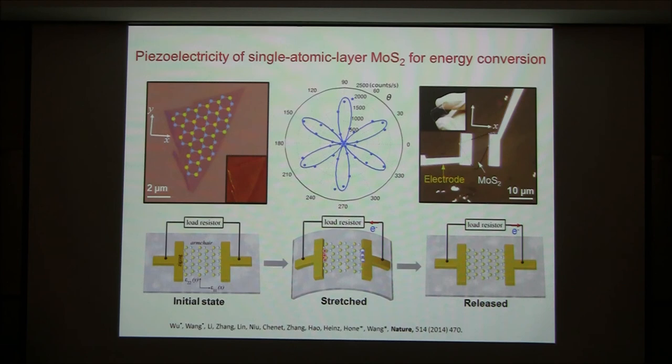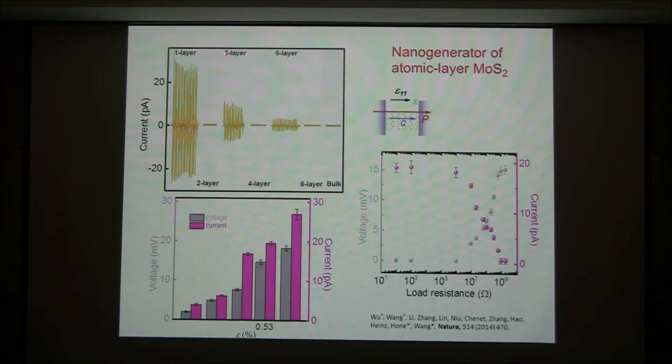This is called similar to the piezoelectric nanogenerator, just using a single atomic layer. When you release the strain, the electron flows back — you see an AC output. We measured single atomic layer, three atomic layer, and five atomic layer. We clearly see piezoelectric output for one layer, three layers, and five layers — but for two layers, four layers, and six layers, none.